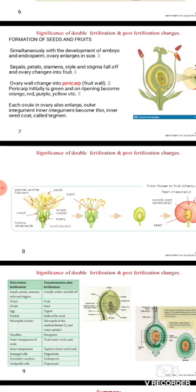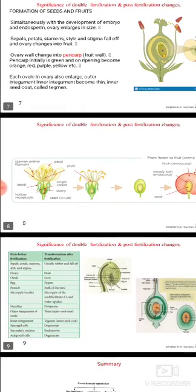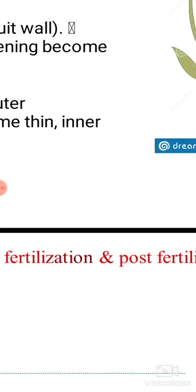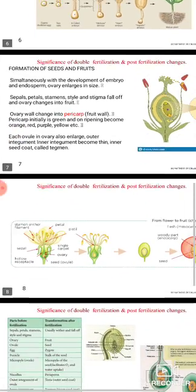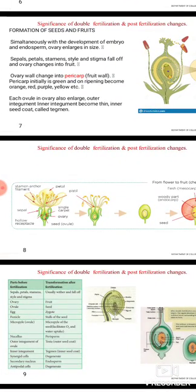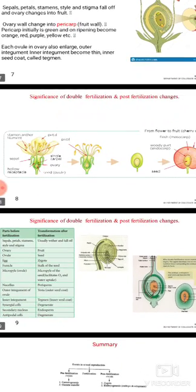Each ovule in the ovary also enlarges. The ovules are present inside the ovary in the locules, and the number of locules in the ovary varies — it may be one, two, or many. Each ovule enlarges: the outer integument and inner integument become thin, forming the outer and inner seed coats.